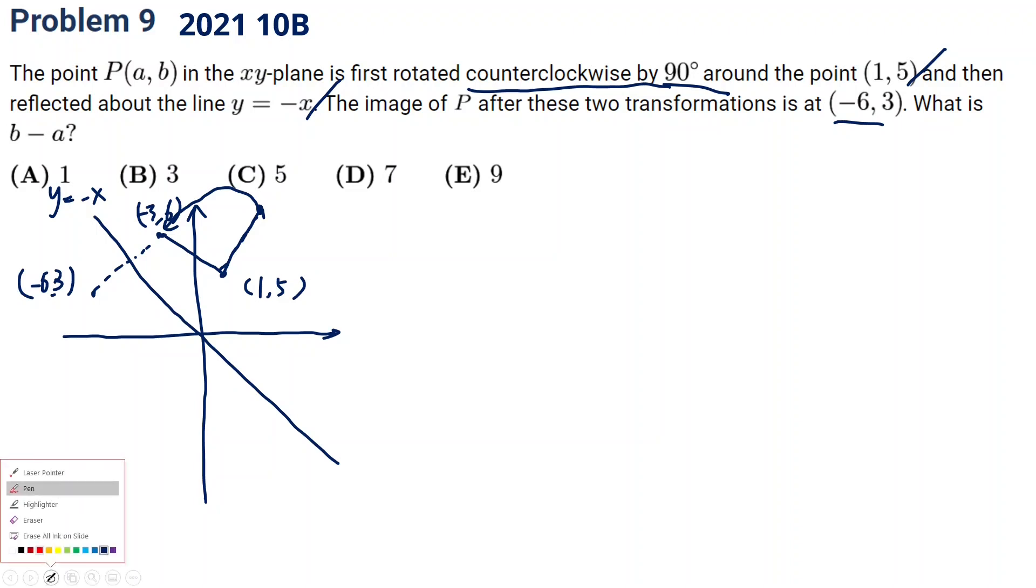Let me use a different color. So the horizontal distance, this line is negative 3 to 1 is 4. And then vertically 6 minus 5 is 1. And the rotate 90 degrees, which means this is 1, this is 4. So from point (1, 5) plus 1, this point will be 2. And 5 plus 4 is 9. So we get AB is (2, 9), so 9 minus 2, the answer is 7.